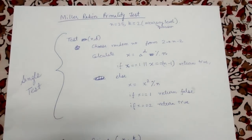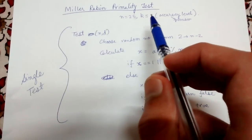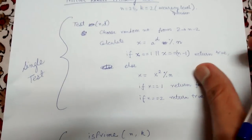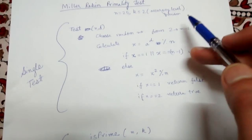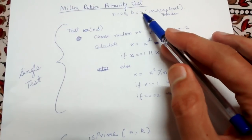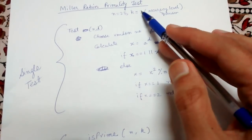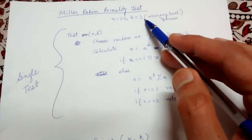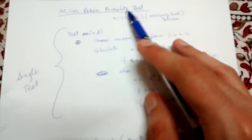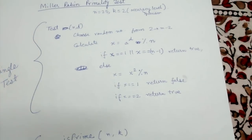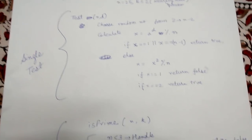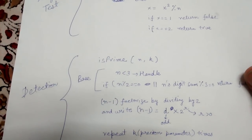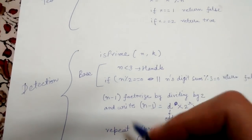Today we will be looking at the Miller-Rabin primality test. This test is used to detect whether a number is prime or not. You are given a number n, say 25, and a parameter k that is the accuracy level or precision. The higher k is, the greater the precision will be, and the lower k is, the lower the precision will be. Miller-Rabin is an approximate test — it can sometimes give wrong results, but it will give correct results with very high probability even for very large numbers.